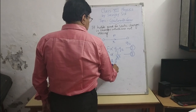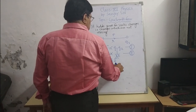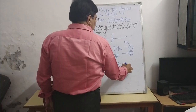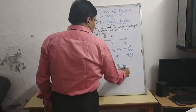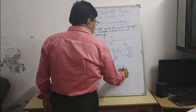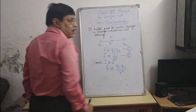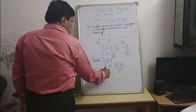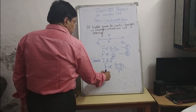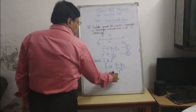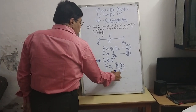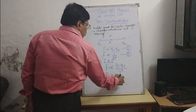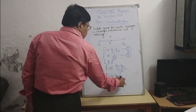So F is proportional to Q1 Q2 upon R square. Now removing the proportionality sign, this becomes F equal to K Q1 Q2 upon R square.